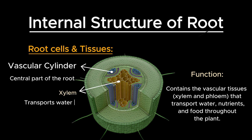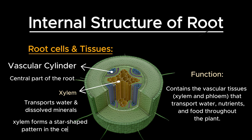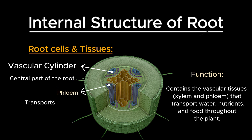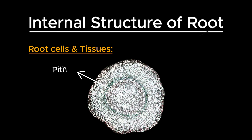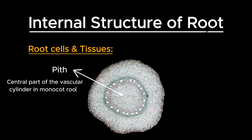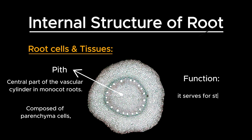Xylem transports water and dissolved minerals from the roots to the rest of the plant. In many roots, the xylem forms a star-shaped pattern in the center. Phloem transports organic nutrients, particularly sugars, from the leaves to other parts of the plant. Phloem cells are located between the arms of the xylem star in many roots. The pith is the central part of the vascular cylinder in monocot roots. It is composed of parenchyma cells, which serve for the storage of nutrients.